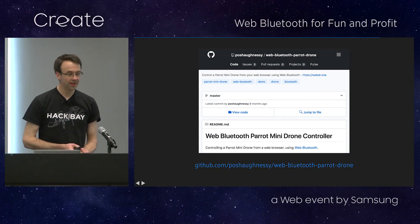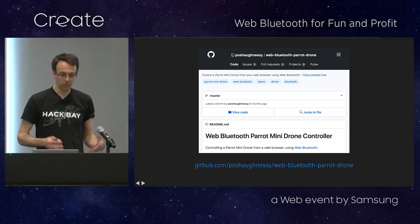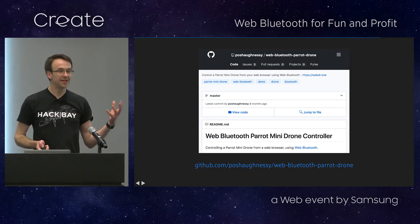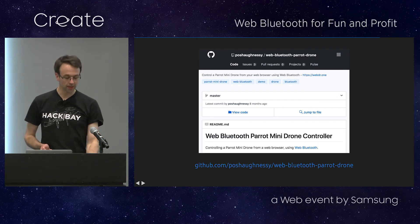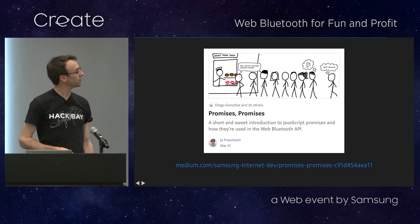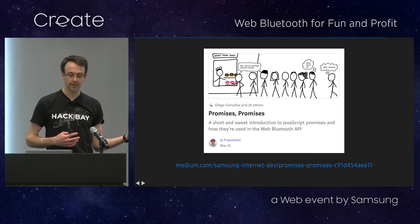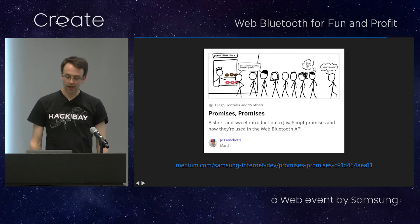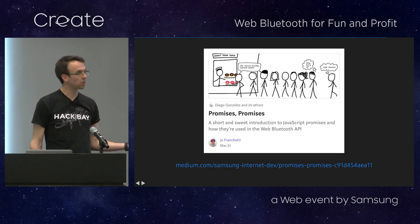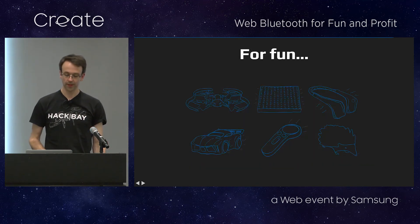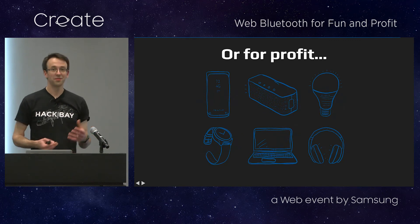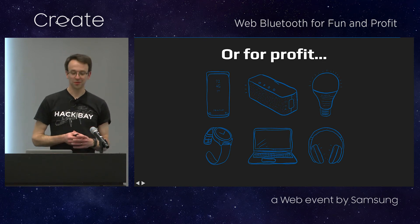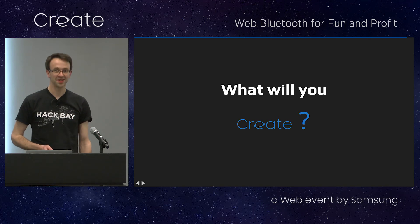That was in case the demo failed. The full code for that example is up on GitHub if you want to take a look, fork it, or do something else with it. It may not be the best starting point if you're writing your very first Web Bluetooth application because the communication with the drone is a little bit complicated. If you are new to Web Bluetooth, and especially if you're new to JavaScript Promises which you use to access the API, I recommend this article from our colleague Joe — Promises, Promises — which is up on our Medium blog. Whether you use Web Bluetooth for fun things like the drone, or whether you have ideas for enterprise IoT or some other consumer technology, I hope this has given you some ideas for things to create.